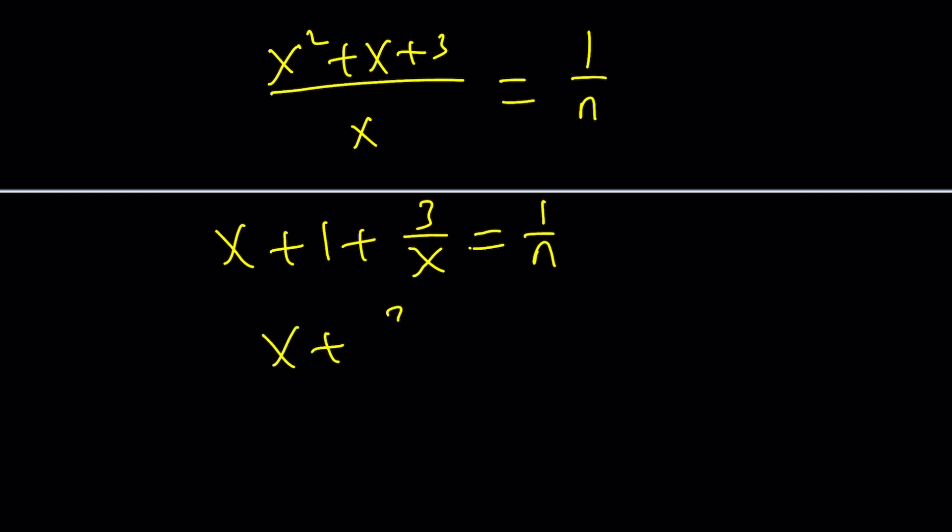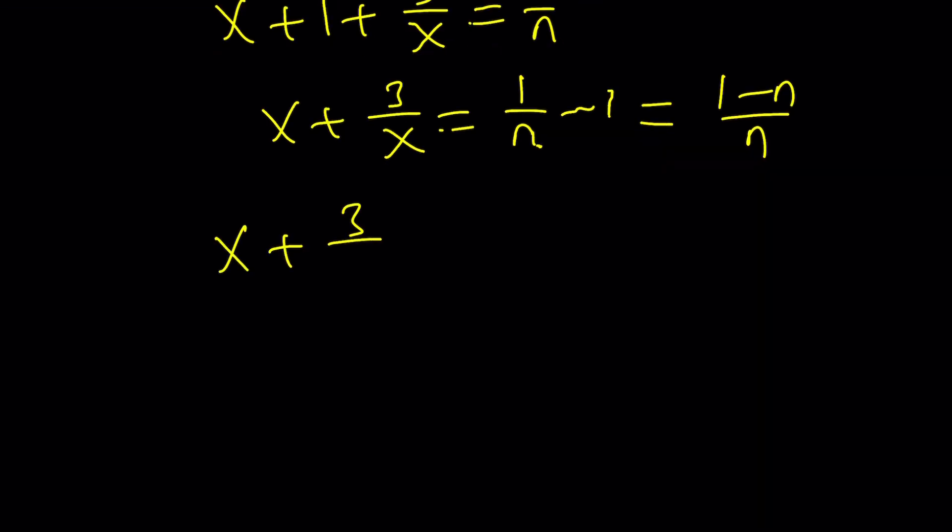When we split it should give us x plus 1 plus 3 over x equals 1 over n. Subtract 1. Make a common denominator. And this gives us, let me write it one more time, the following. Okay so far so good. Now square both sides to get to the x to the fourth.